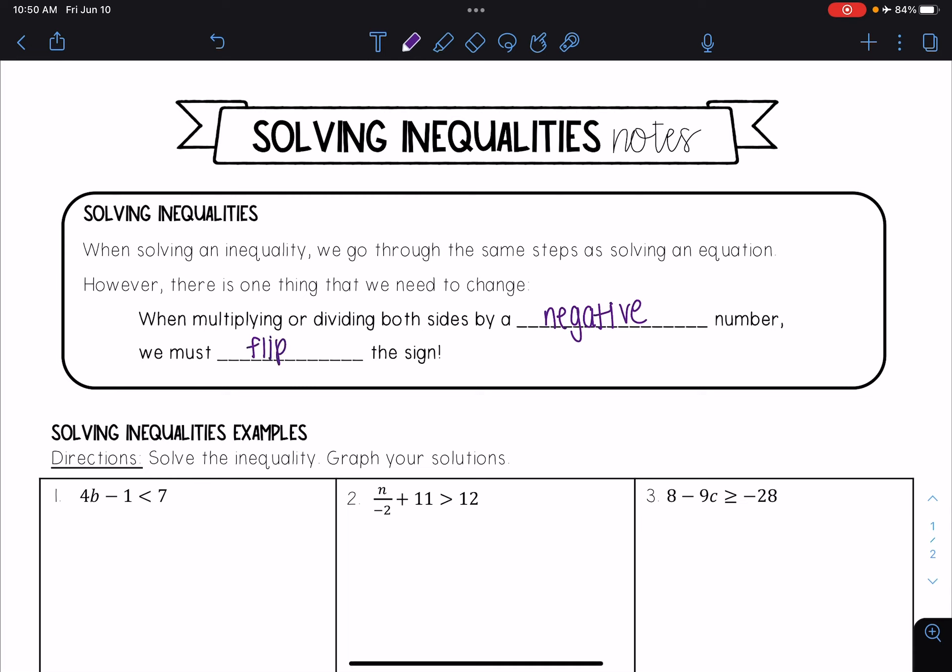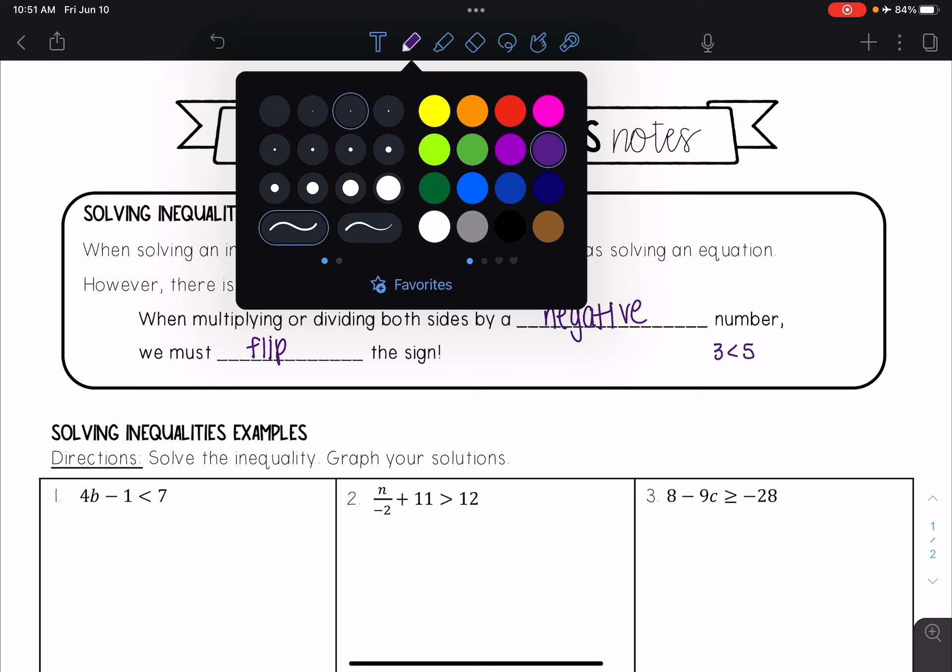And I'll show you an example of why this is the case. Let's say we had that 3 is less than 5. Looking at that, we all know that's true. We all know that 3 is in fact less than 5.